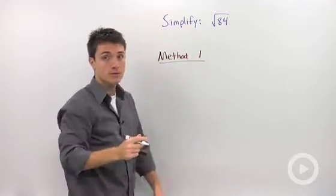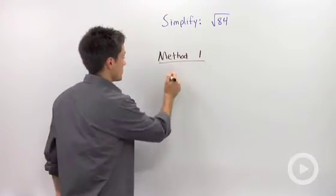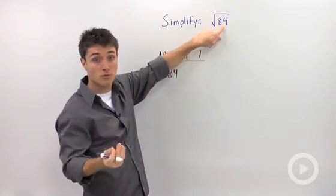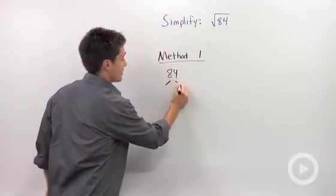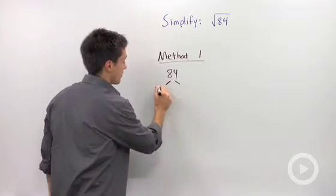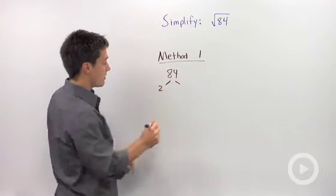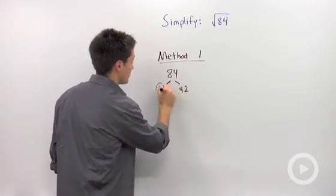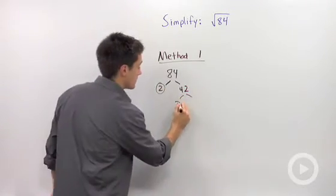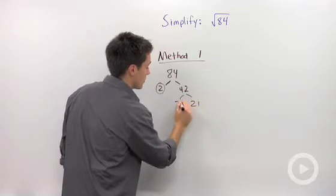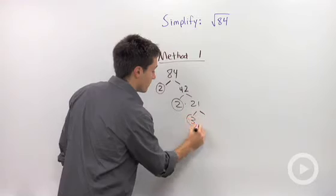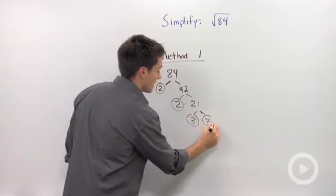Method one is using the prime factors. So you're going to take whatever you're taking the square root of and you're going to find the prime factors. I'm going to start with two and two goes into 84 42 times. I'm just going to keep factoring and I'm going to circle the numbers that are prime. So I'm going to say this is two times twenty-one and two is prime. Twenty-one is not, but I can break it up into three times seven.